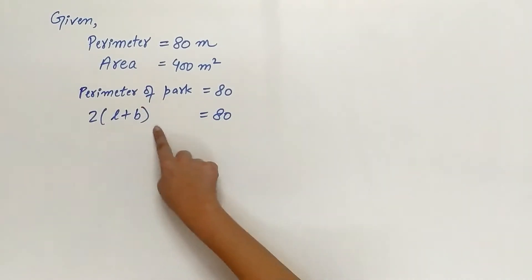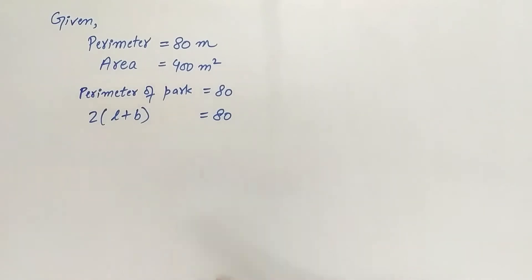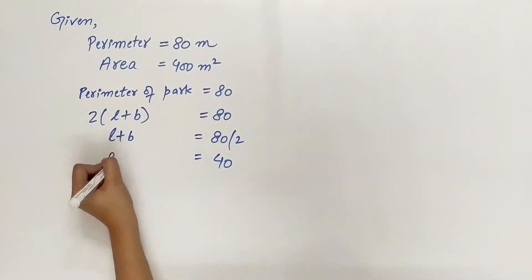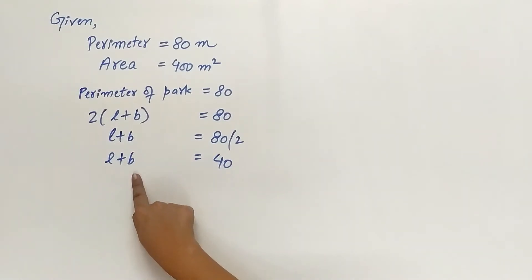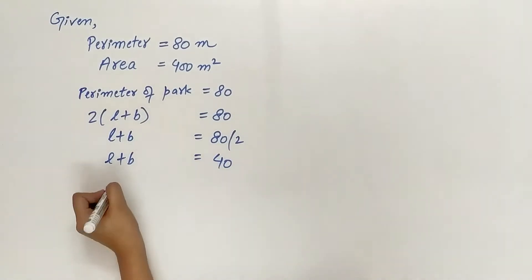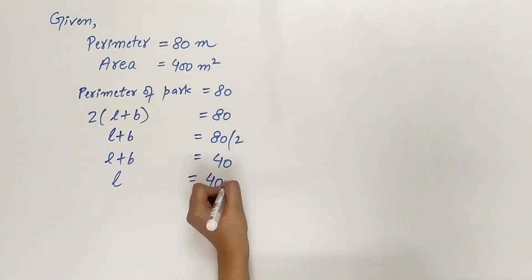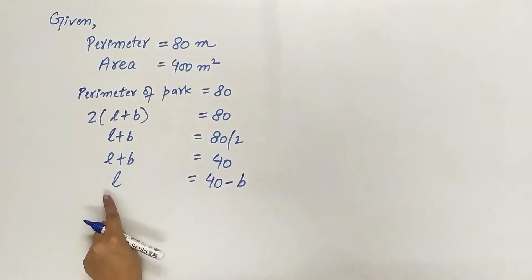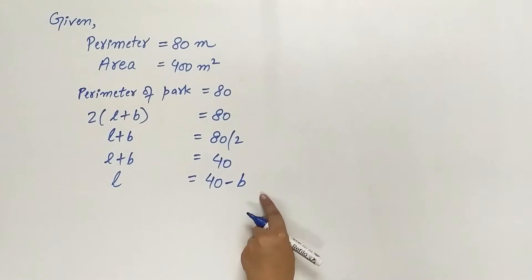Perimeter of rectangle is 2 multiplied by length plus breadth, which is equal to 80. L plus B is equal to 80 divided by 2, which is equal to 40. Transpose either L or B to right side.